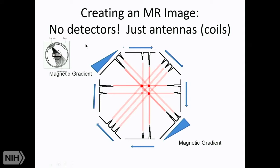MR imaging creation is similar to CT in using a back-projection technique, but instead of x-rays, we use magnetic gradients to decide where the signal is coming from. By accumulating many gradients at different strengths, we can figure out where the various signals originate, detected using RF antenna — very similar to a radio antenna.